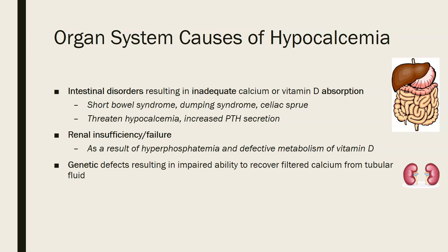Renal insufficiency or renal failure is another major cause — many people have chronic kidney disease, and the resulting hypocalcemia is due to hyperphosphatemia, since calcium and phosphate move in opposite directions: when kidneys can't clear phosphate, it accumulates and calcium drops. It can also be due to defective vitamin D metabolism — you need active vitamin D to properly absorb calcium in the intestines. There are also endogenetic defects that result in impaired ability to recover filtered calcium from tubular fluids and reabsorb it back into the blood. Those are the causes of hyper- and hypocalcemia.